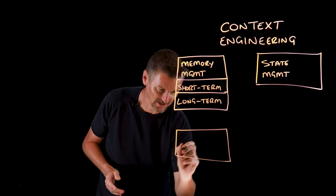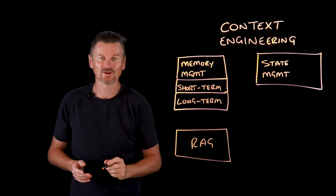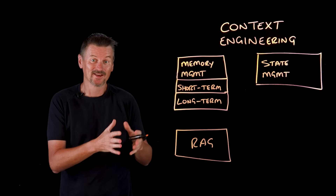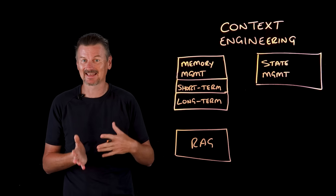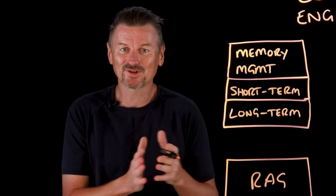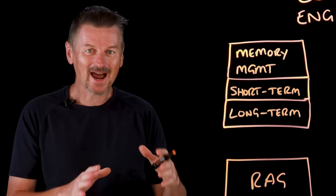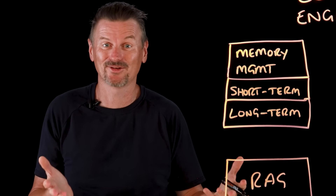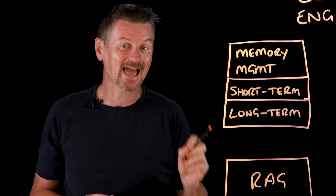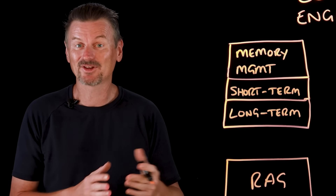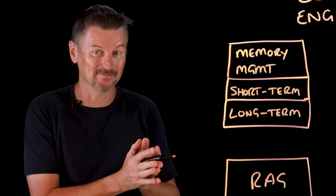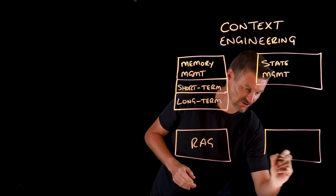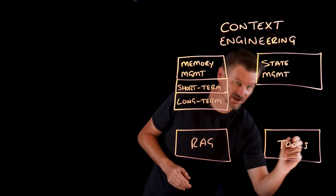Another important component is Retrieval-Augmented Generation, or RAG, which connects an agent to dynamic knowledge sources. RAG uses hybrid search, combining semantic and keyword matching based on context. So when retrieving your company's travel policy, RAG isn't returning the entire document — there's a lot of irrelevant content in there. Instead, it picks out the relevant sections and exceptions, returning only those contextually relevant parts back to the agent.